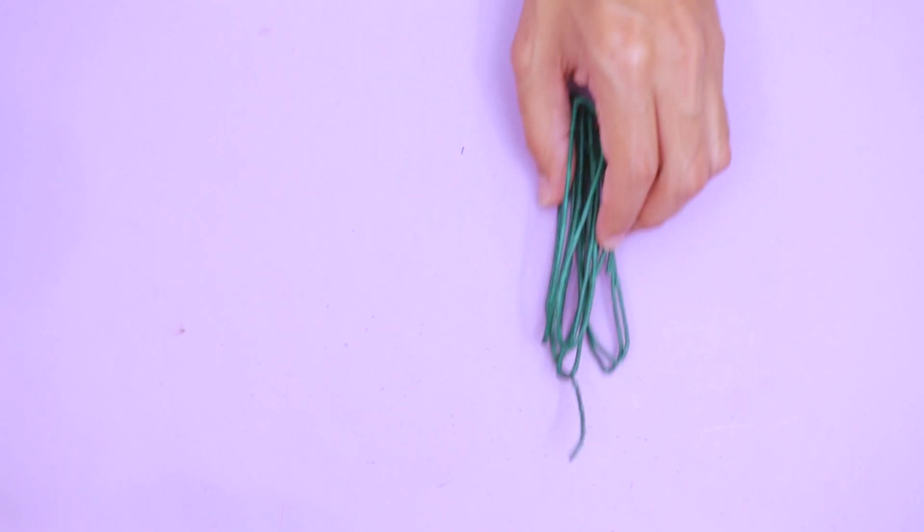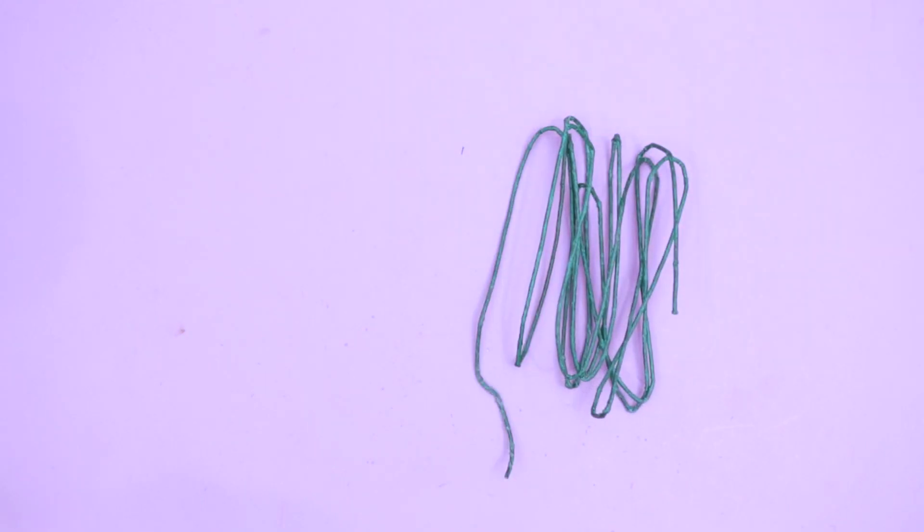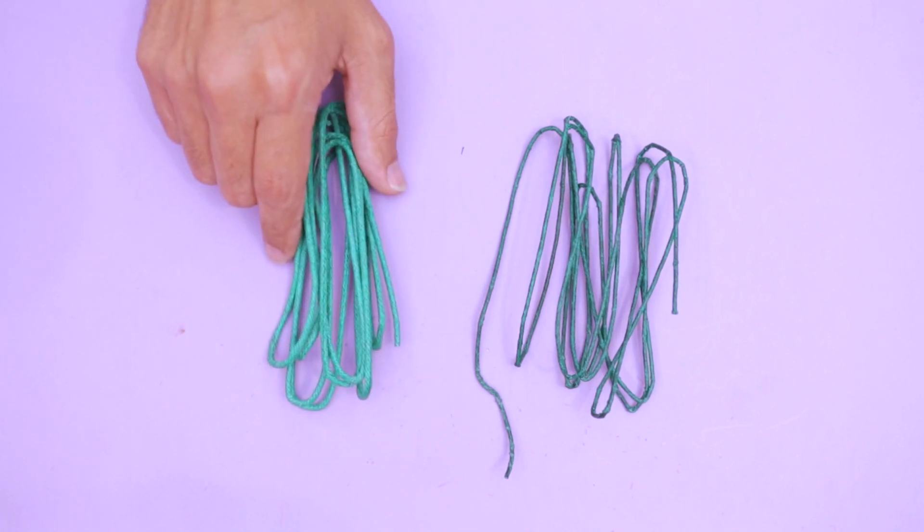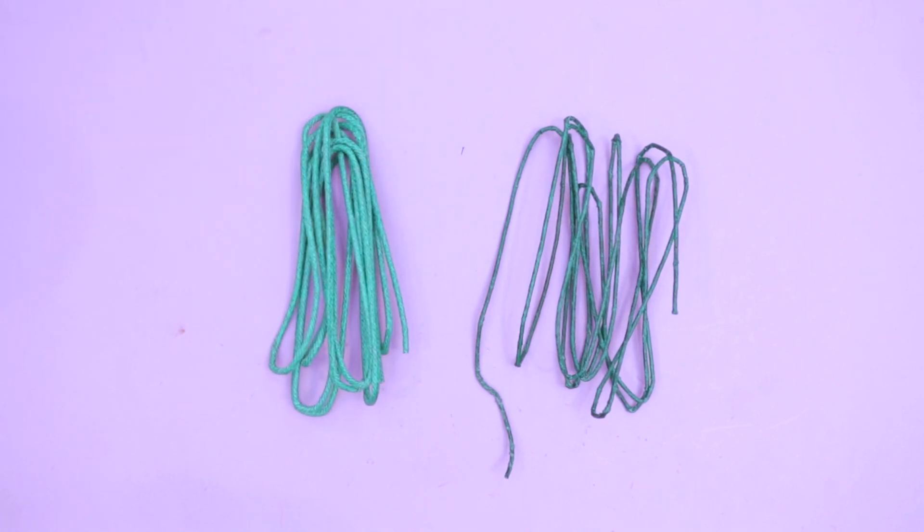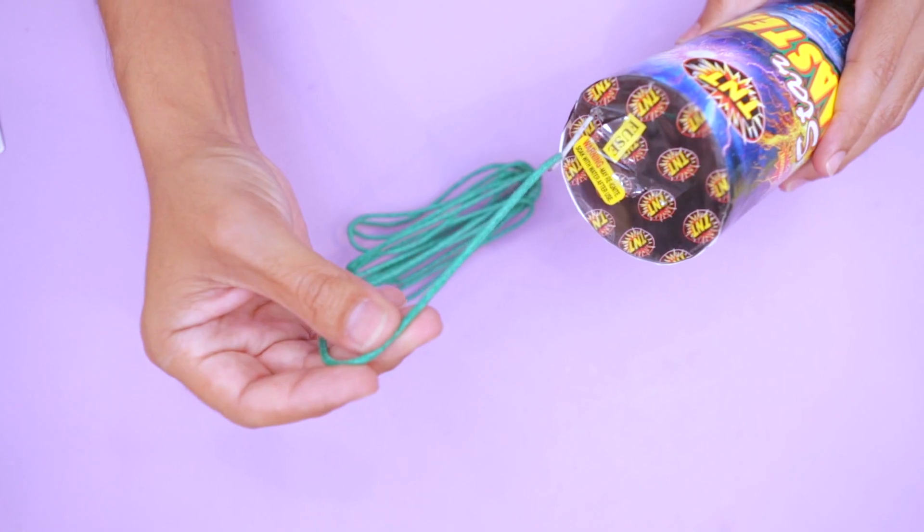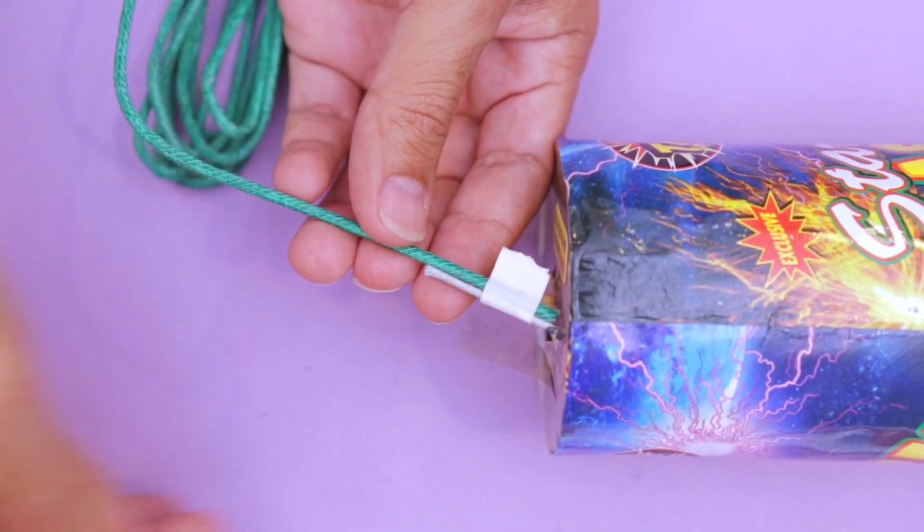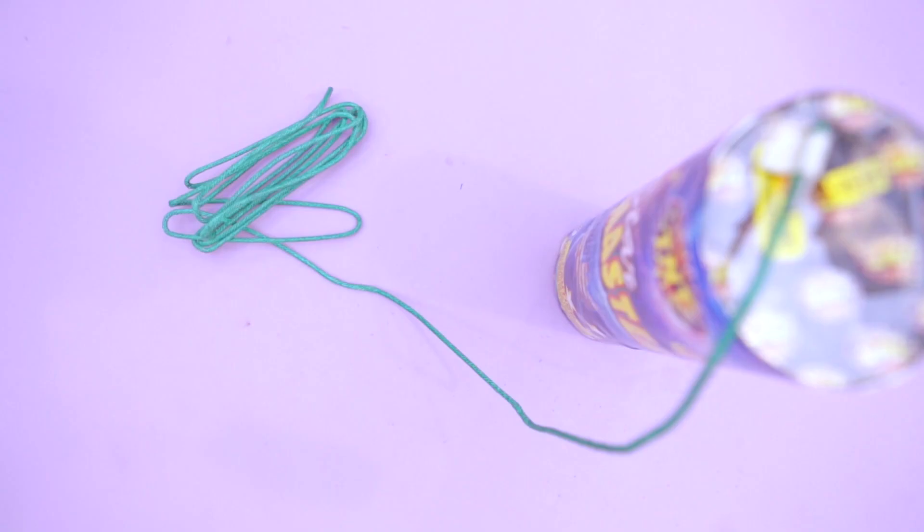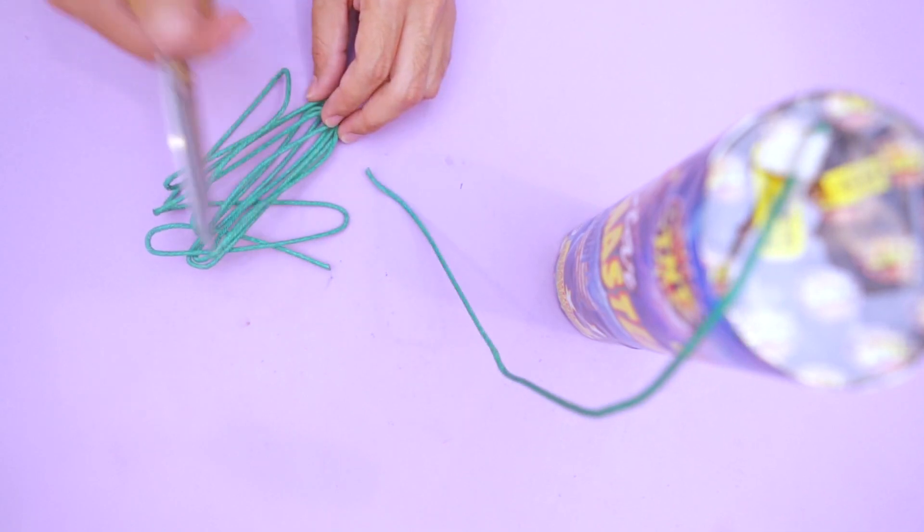We got ourselves some lengthy fuses so we could extend our setup. These come in different sizes. This thicker fuse will burn more quickly and emits large sparks. You can attach the extension to the main fuse with a piece of paper tape. And this will give you extra time to back away when it gets ignited.